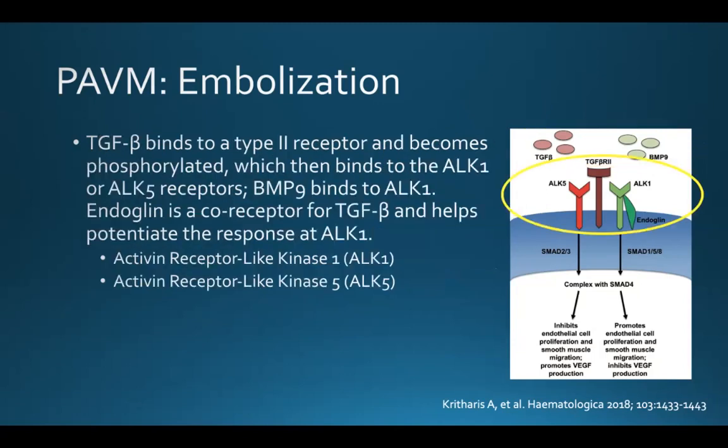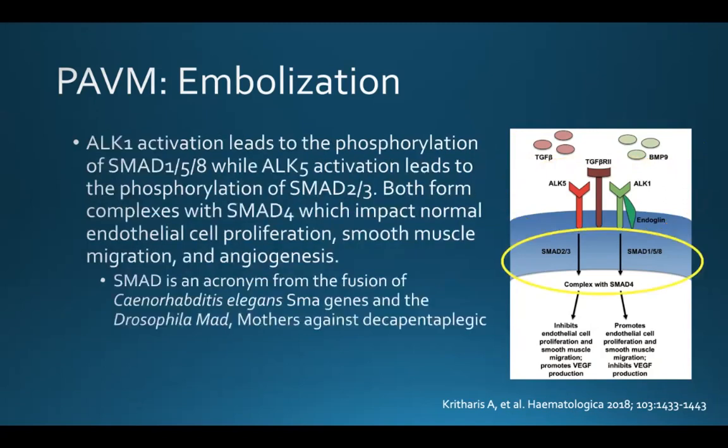TGF-beta binds to a receptor and becomes phosphorylated, which then binds to the ALK1 or ALK5 receptors. In addition, BMP9 binds to ALK1. Finally, endoglin is a co-receptor for TGF-beta and helps potentiate the response at ALK1. The activation of ALK1 and ALK5 lead to phosphorylation of protein complexes, which then impact normal endothelial cell proliferation, smooth muscle migration, and angiogenesis.